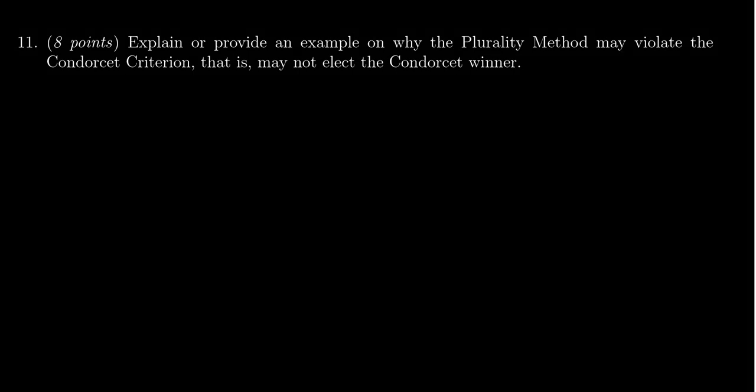In this video, we provide the solution to question number 11 for practice exam number three for Math 1030, in which case we need to find an example of a time where the plurality method might violate the Condorcet criteria. So we need a Condorcet winner who's not the plurality winner. And so how do you do that? I should mention that answers may vary on this one.